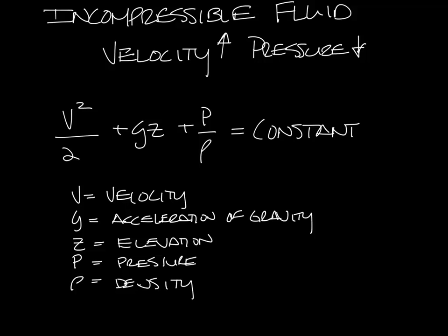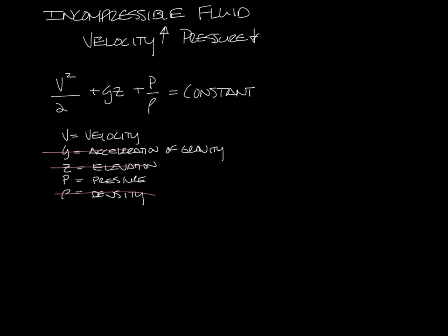Now the equation takes into account gravity, elevation, and density — but for our HVAC purposes, these can be ignored. A simplified version of Bernoulli's equation becomes P plus Q equals P naught.